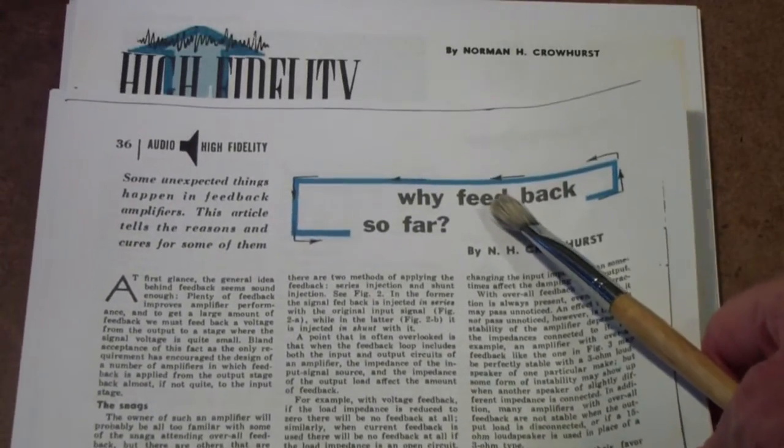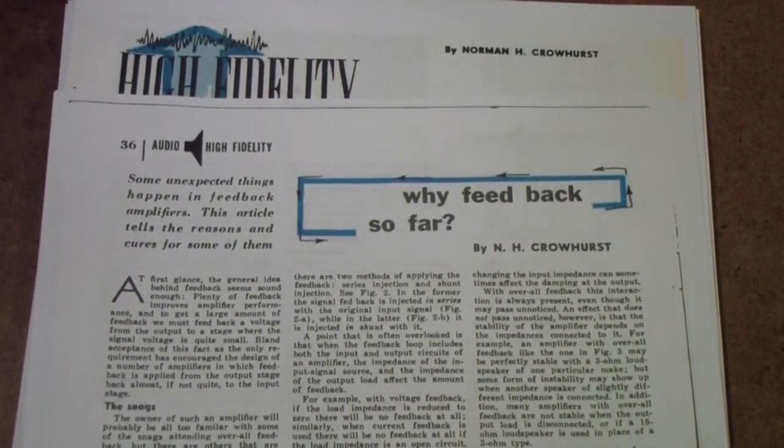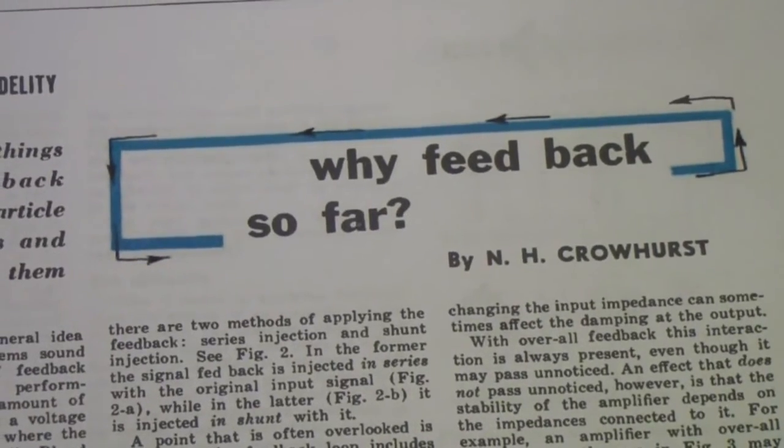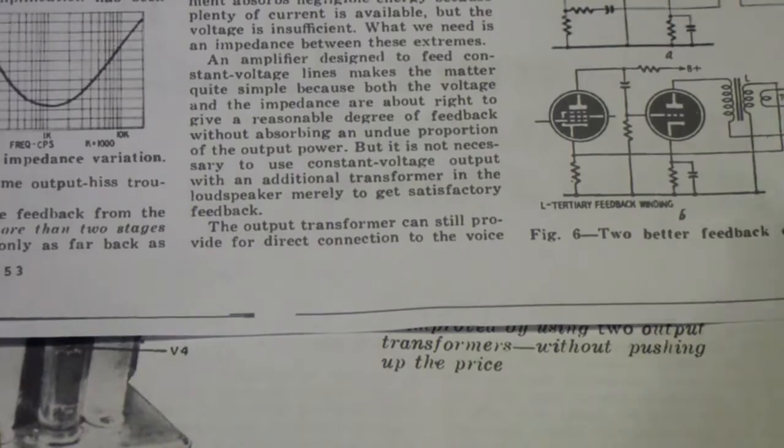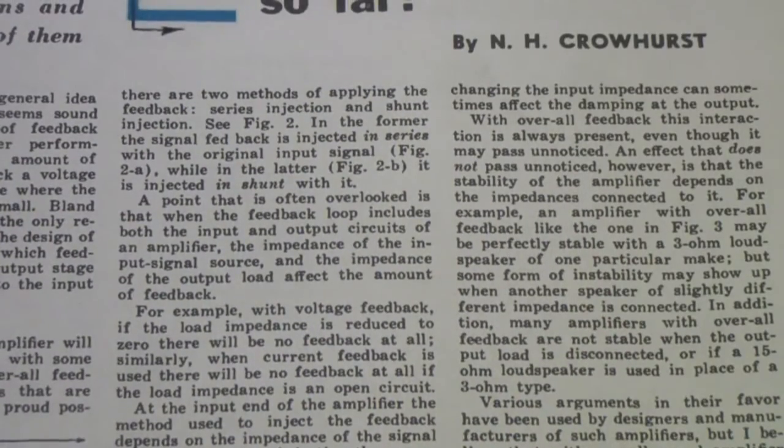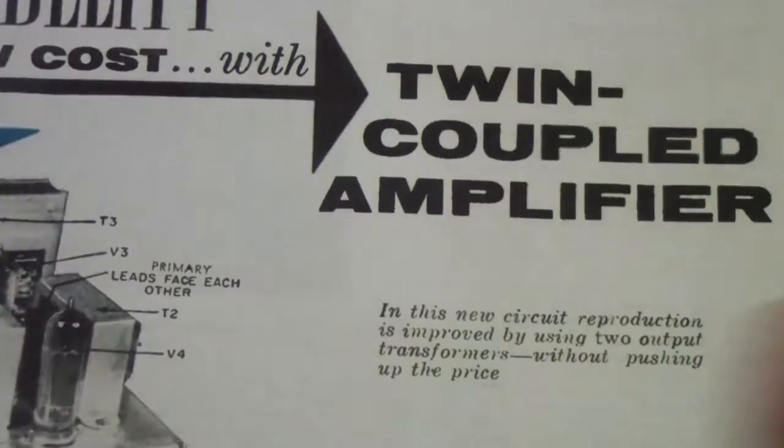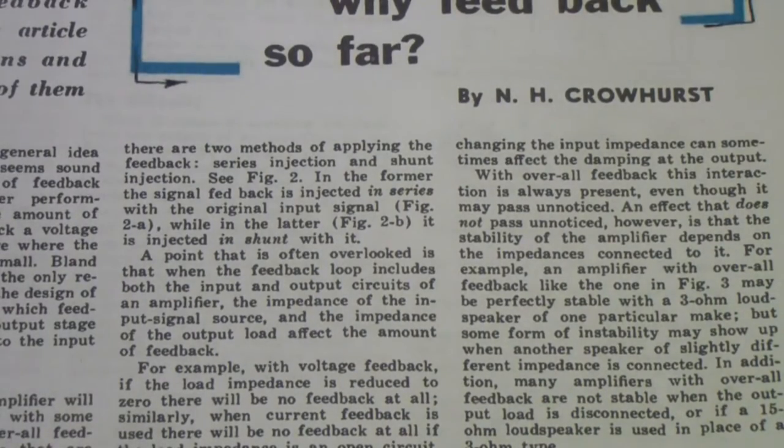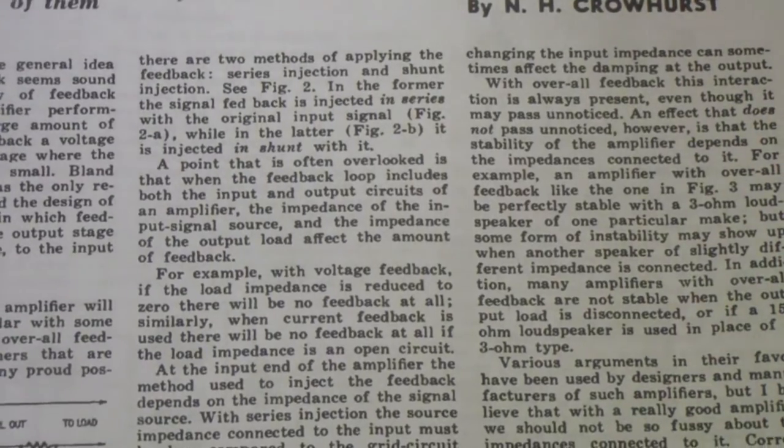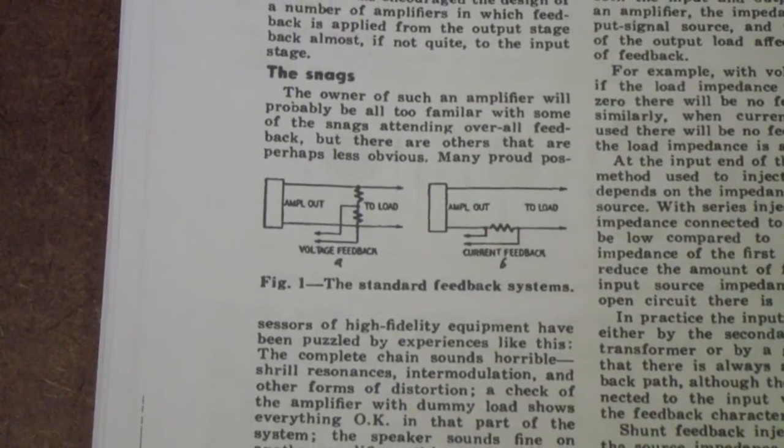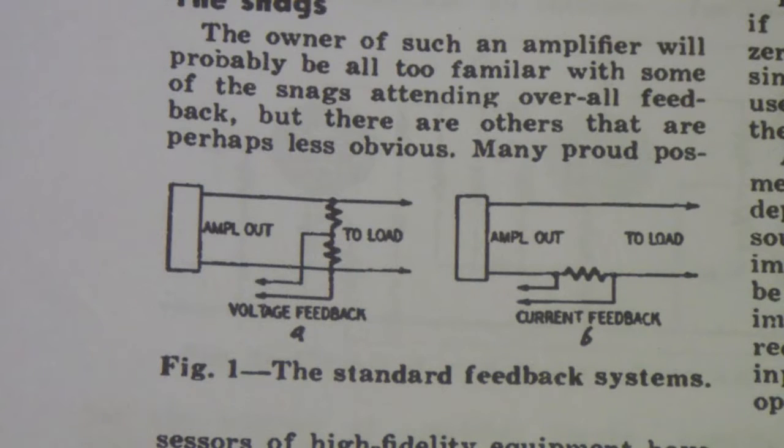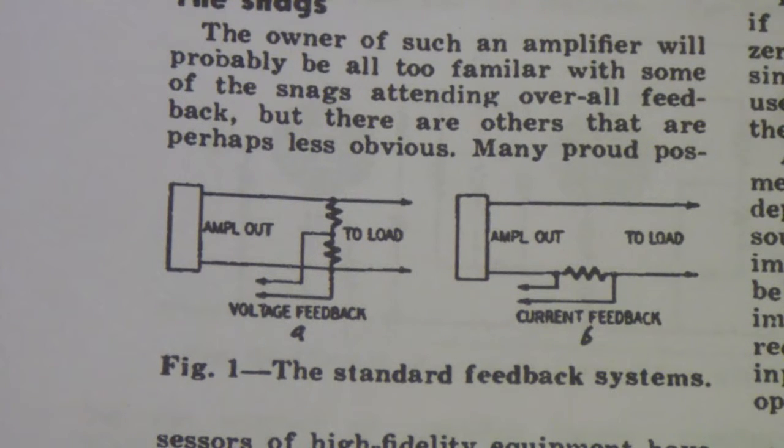Before I go into twin-coupled amplifiers, I would like to review a little bit about feedback. I'm primarily going to be using this article by Norm Crowhurst. It appeared in the September 1953 edition, so it predates the twin-coupled amplifier that I'm going to talk about a little bit later. You may recall that the Williamson amplifier was a feedback amplifier, and that was one of the major improvements that Williamson made.